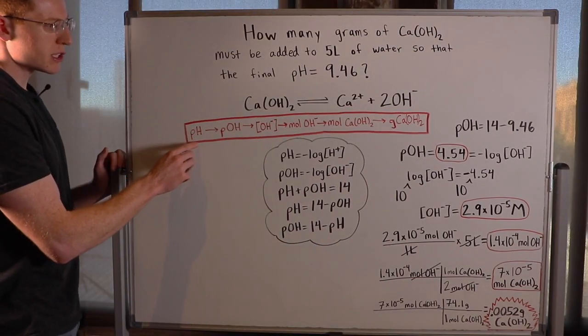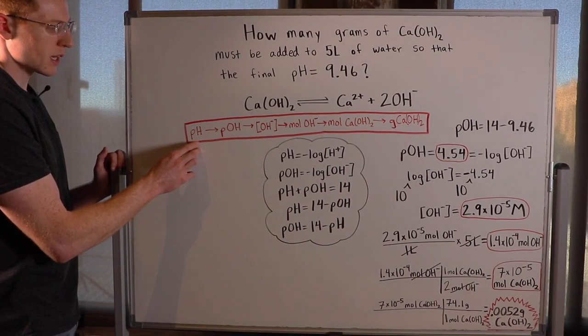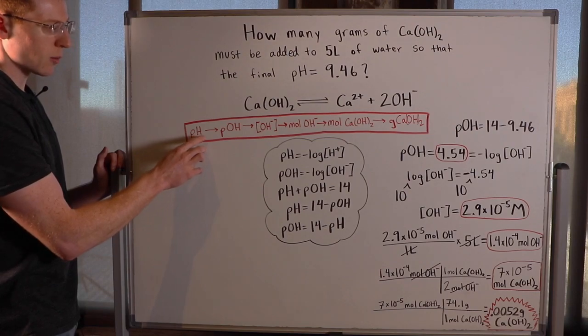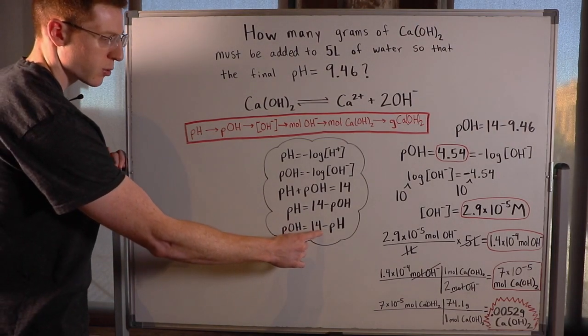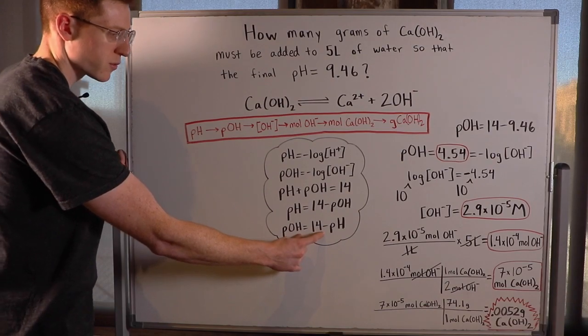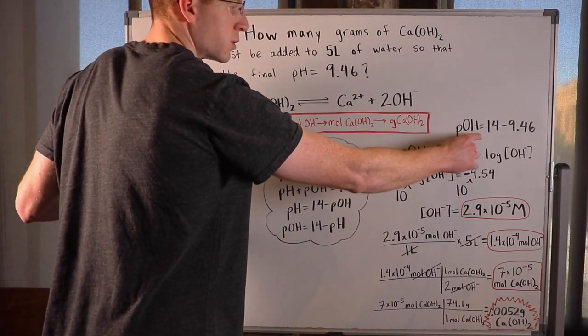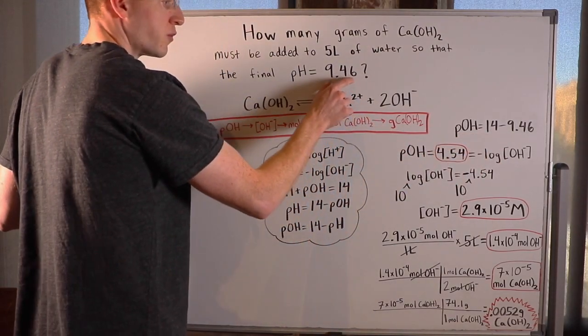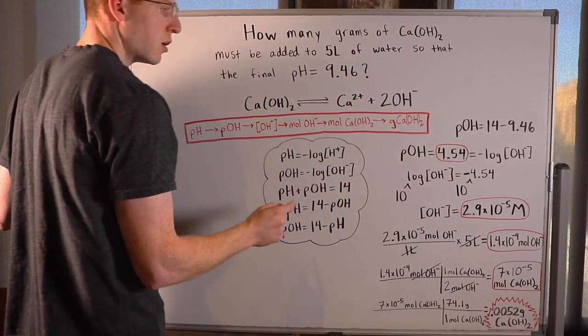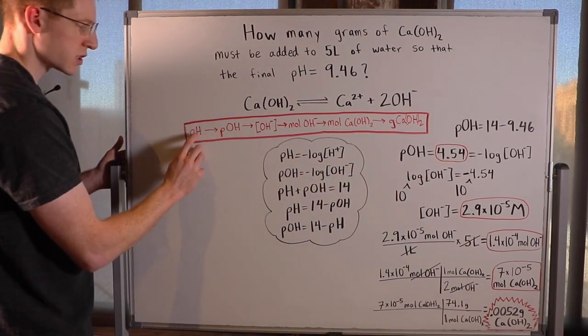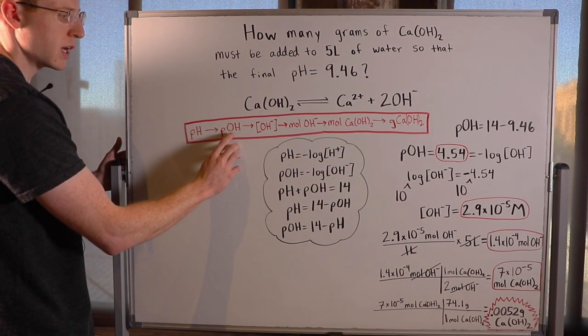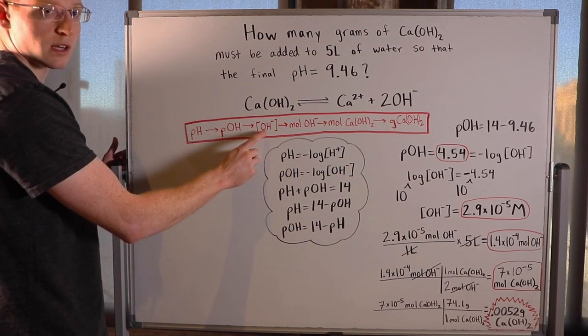Following this general scheme in this red box, I started out with pH, and I wanted to get to pOH. So I used this equation, pOH equals 14 minus pH. So this left me with pOH equals 14 minus 9.46, and I found that the pOH is 4.54. So step one is done. I found the pOH, and with this I'm going to try to find the hydroxide concentration.